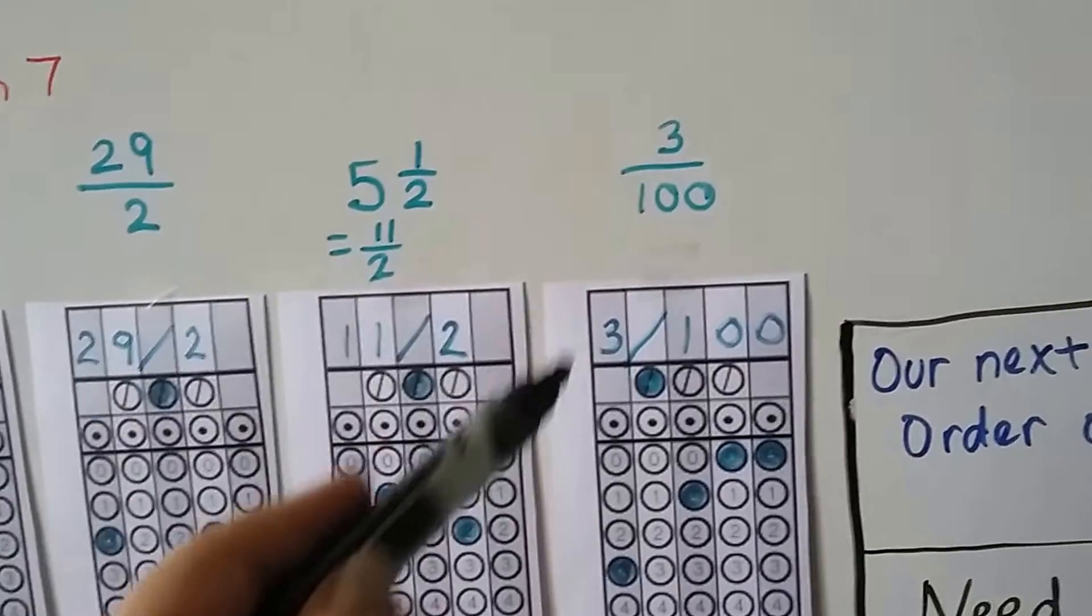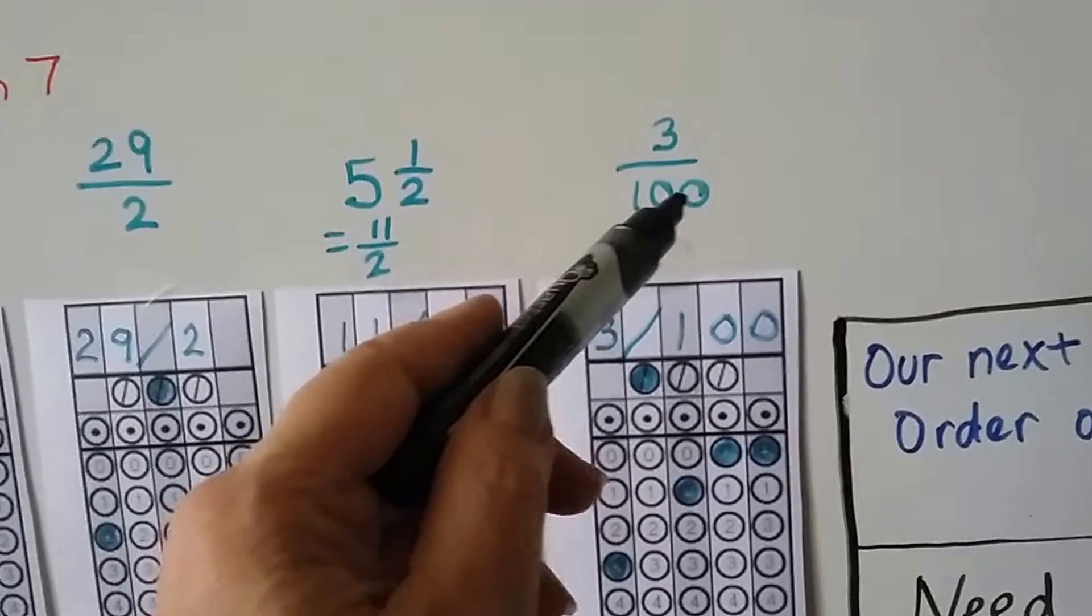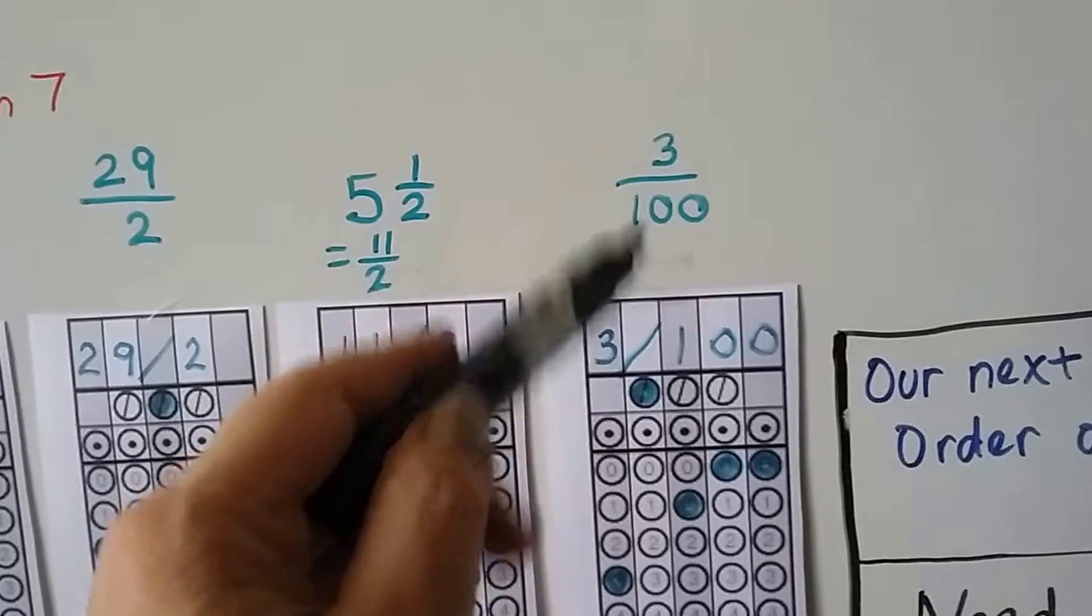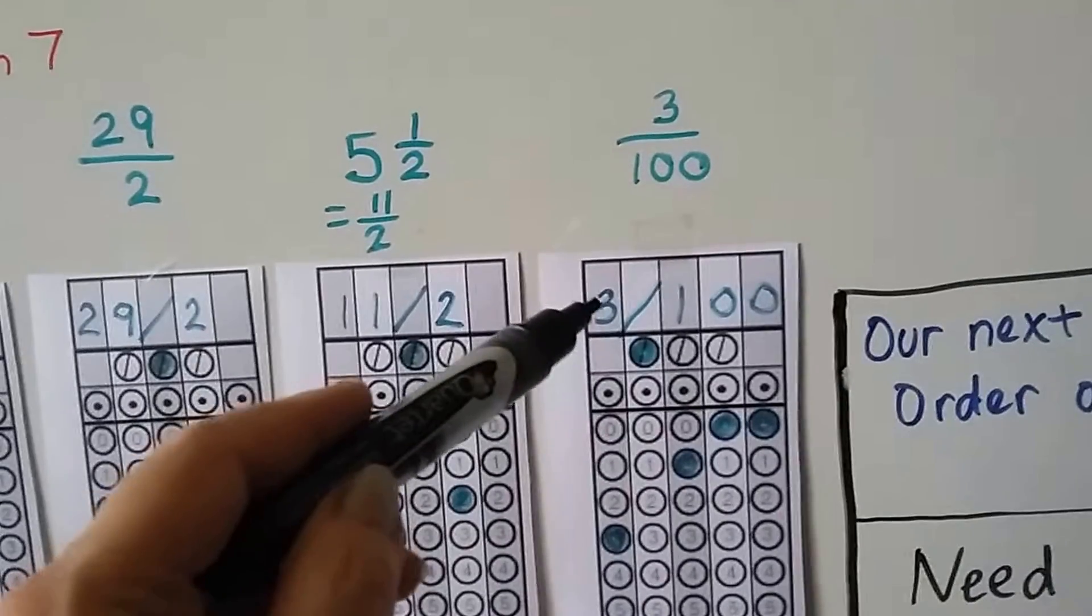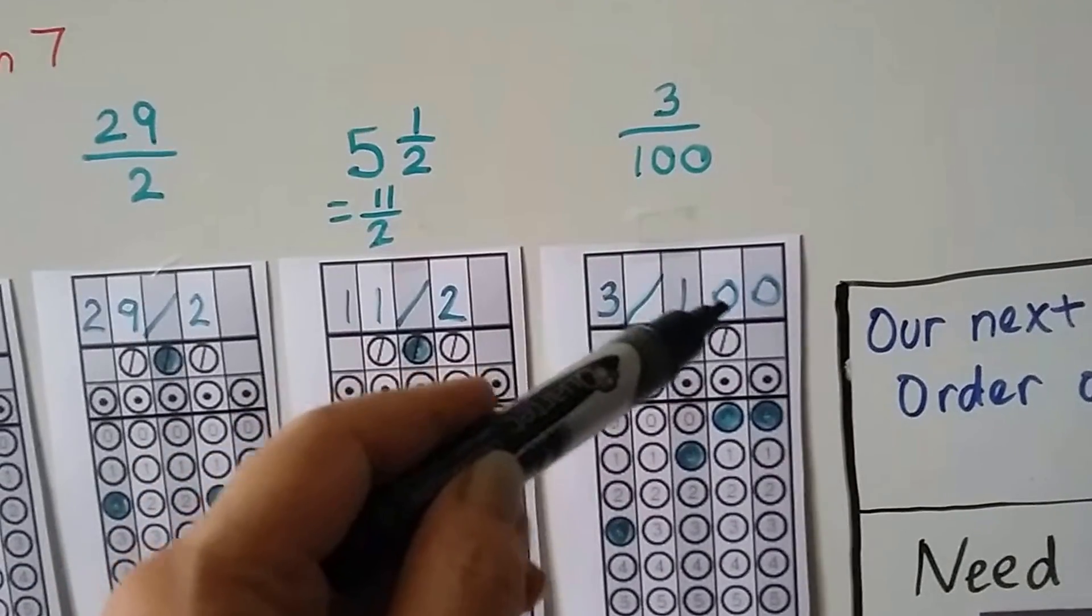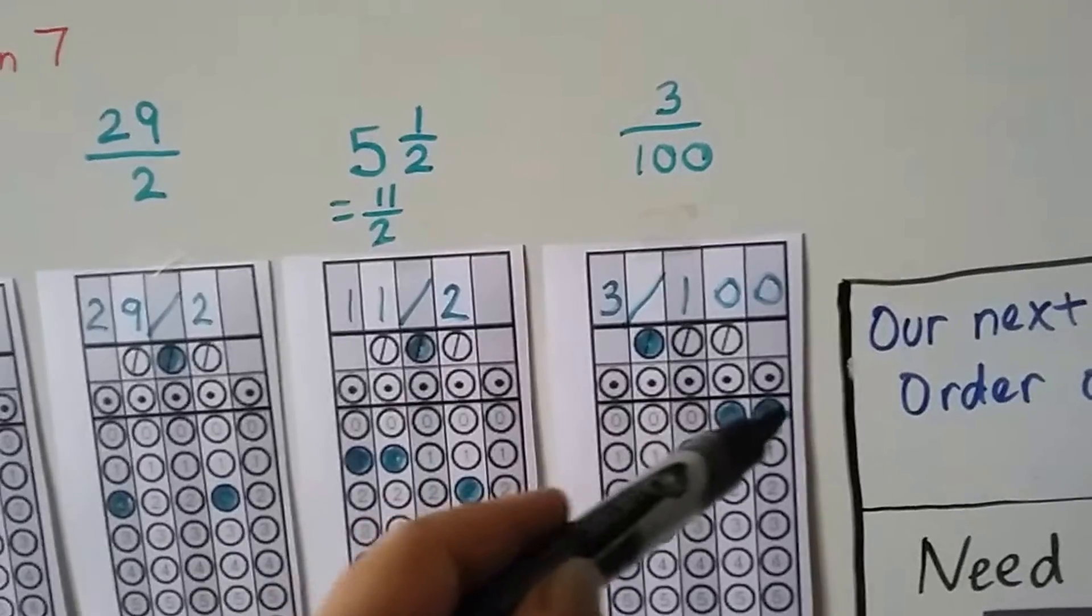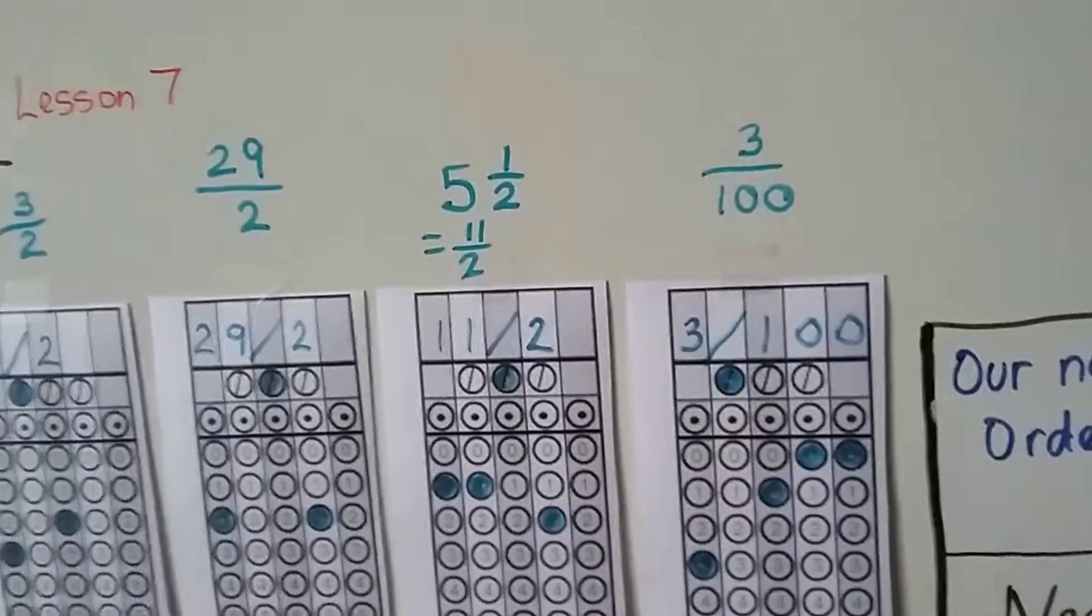If you have 3/100, these zeros down here are important. It's not 3 over 1. It's 3 over 100. So you need the 3, the slash, the 1, the 0, and the 0. And you have to fill in those zeros. That's part of the answer. So take a look at these.